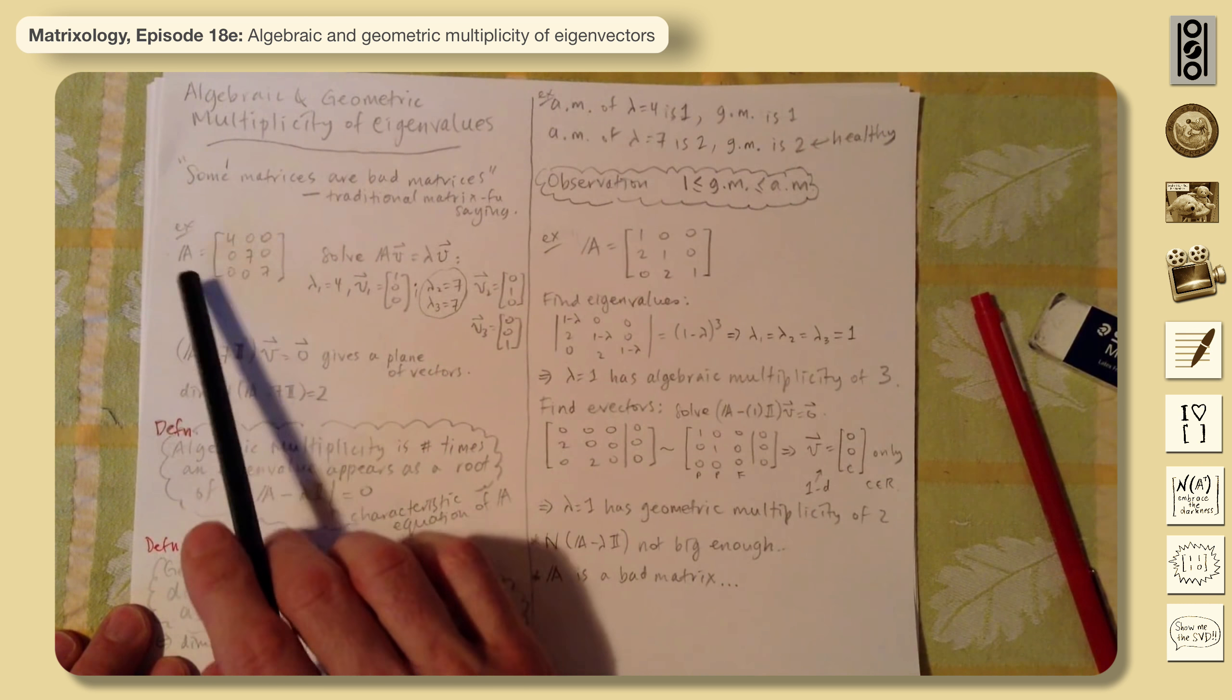So you end up with the eigenvectors, or eigenspace, is really any multiple of just this. Zero, zero, c. Zero, zero, one, I should say. Let's do it like that. x1 equals c, one. So it's pointing in the z direction. So the z direction is good. This thing will preserve the z direction.